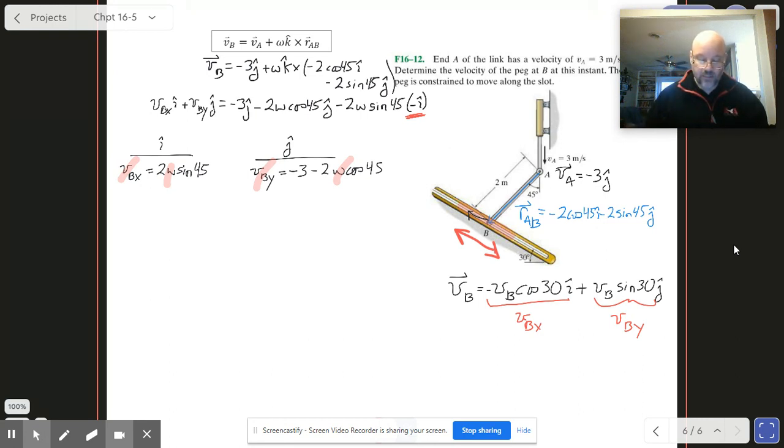Let's take that information and plug it into our other relationship. So VBX was minus VB cosine 30, and that has to be equal to 2 omega sine 45. VBY was VB sine 30, and that's minus 3 minus 2 omega cosine 45, just like that.